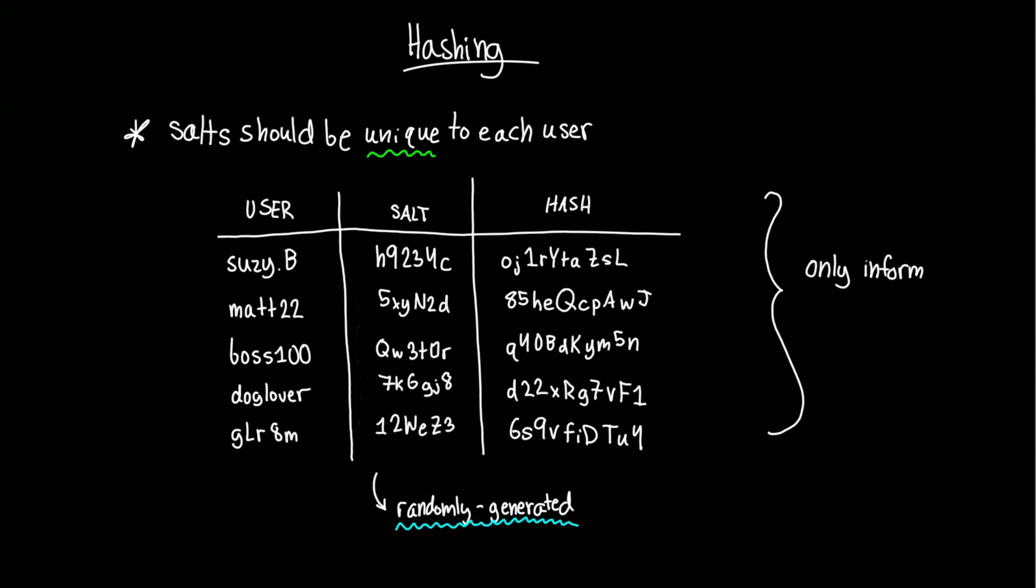Salting also resolves the situation in which a hacker is able to compromise multiple accounts with the same password. Using individual randomly generated salts for each user results in unique hashes. So even if two users have the same password, their hashes will look completely different.